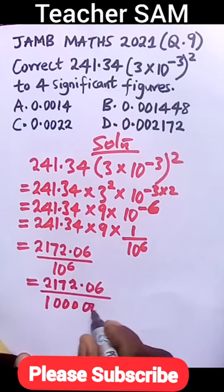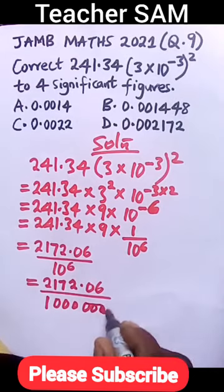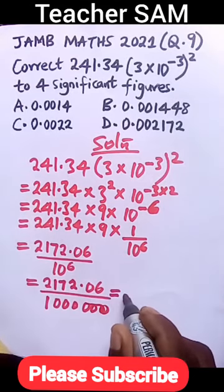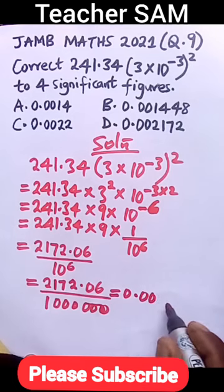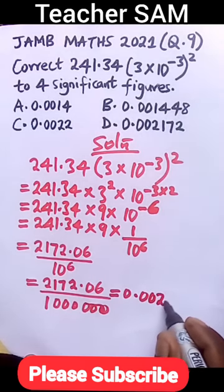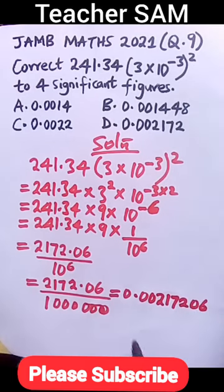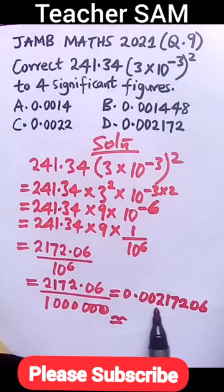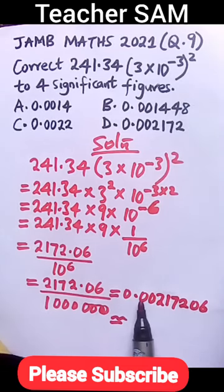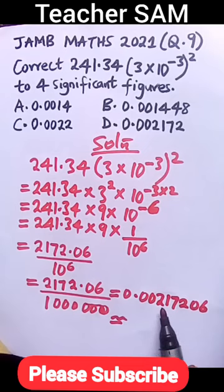If you divide this, you get 0.00217206. Now don't forget, you are asked to correct this to 4 significant figures. For decimal numbers like this with zeros in the first and second decimal places, you start counting from the non-zero numbers.